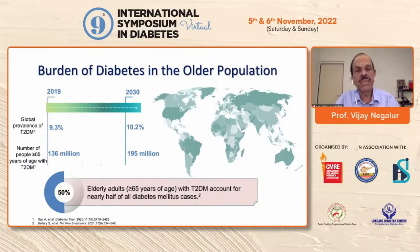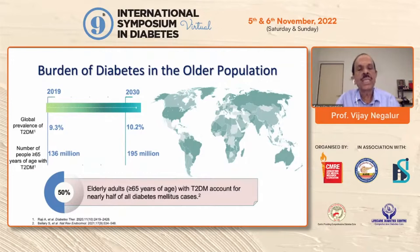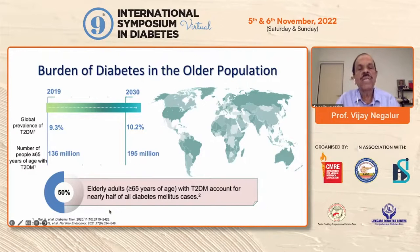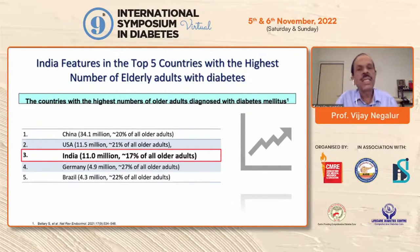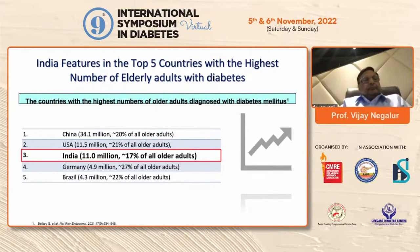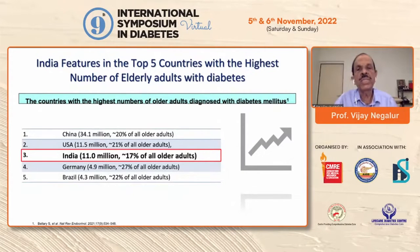This is the burden of diabetes in the older population. We can see approximately 1,395 million expected diabetics by 2030, and the sad part is 50% of these patients will be above the age of 65 years, forming a large chunk of the diabetic population in that age group. India stands among the top five countries with the largest elderly populations, with almost 17% of the elderly population in this country.